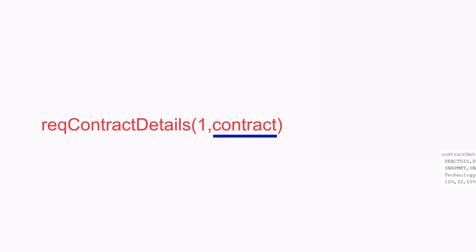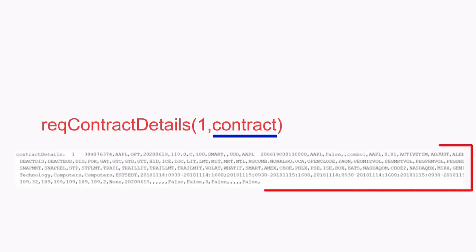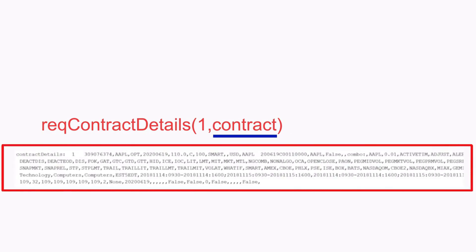First, we'll discuss REQContractDetails. This function is invoked with an object of the Contract class as an argument, and in response, full details for matching contracts in the Interactive Brokers database are returned. This is the only function in the API which can be used with completely defined contract objects.